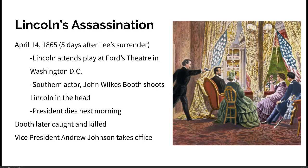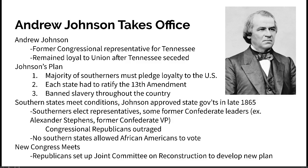Vice President Andrew Johnson had to take office after Lincoln passed. Johnson was a former congressional representative for Tennessee — one of the states that seceded from the Union — but he remained loyal and became vice president. Importantly, Andrew Johnson had a racist streak, which would play into his story. Johnson's plan for Reconstruction was a little harsher than Lincoln's, but people still thought it was too lenient.